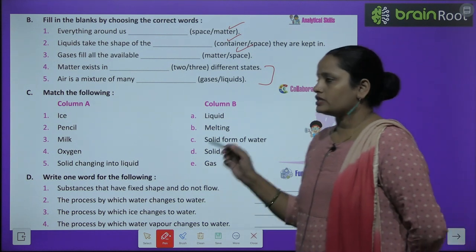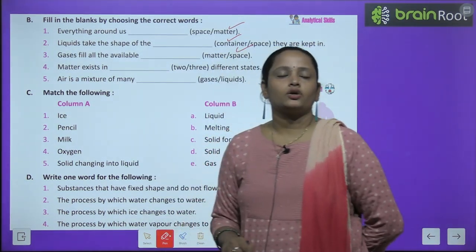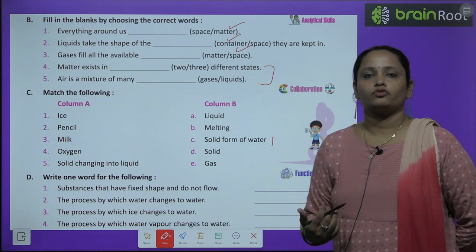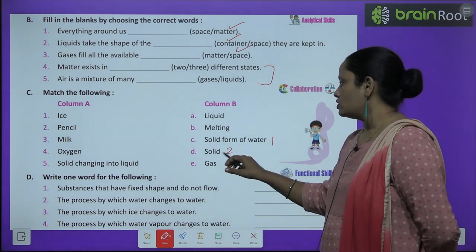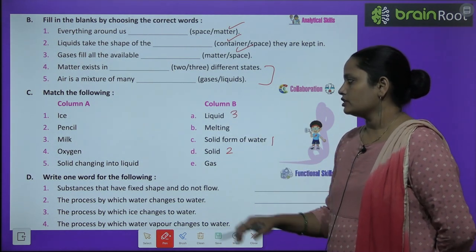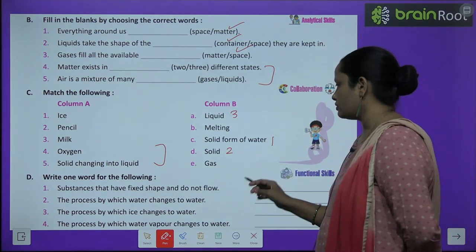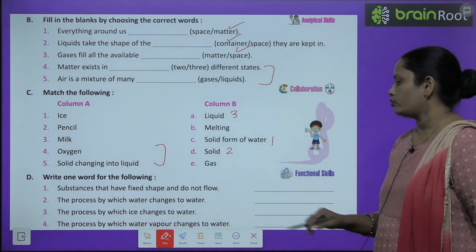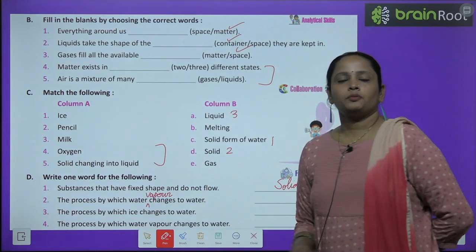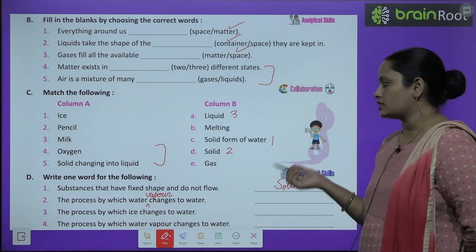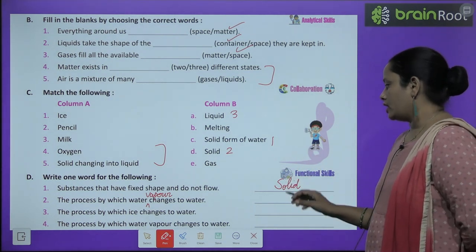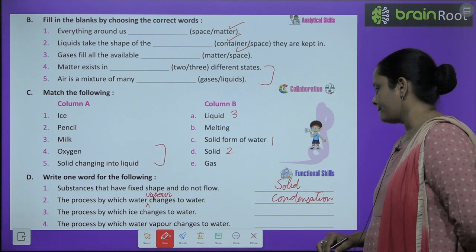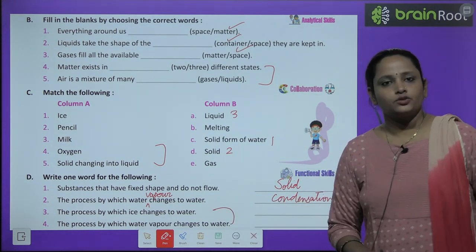Now, let us move on to match the following, which is C part of your exercise. There are two columns, column A and column B. Ice is the solid form of water — water ka solid form ice kehlaata hai. Pencil is a solid. Milk is a liquid. Similarly, children, you have to do the rest yourself. Now, let us move on to D exercise — write one word for the following. Substances that have fixed shape and do not flow are called solid. The process by which water vapour changes to water is called condensation. Do the rest two questions yourself.